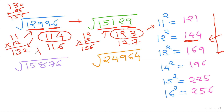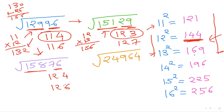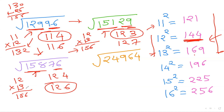Example: 15876. Last digit is 6, so last digit of answer is 4 or 6. Focus on 158. 12² = 144, 13² = 169 — too big, so use 12. Possible answers: 124 or 126. We already know 12 × 13 = 156. This time 158 is bigger than 156, so choose the bigger answer: 126.